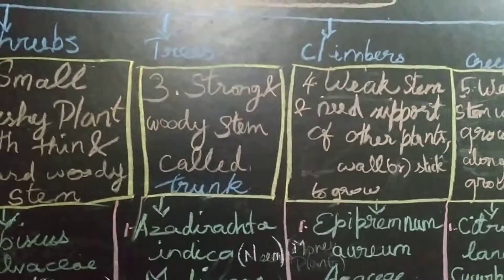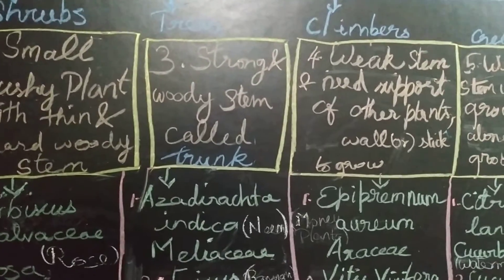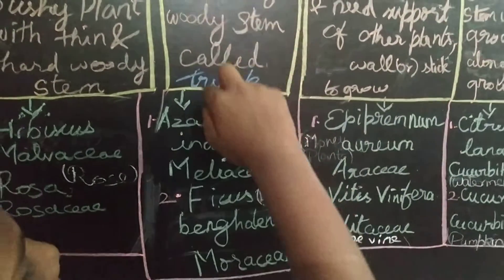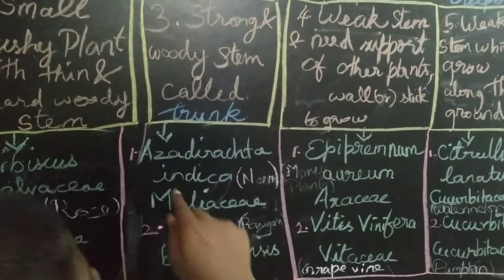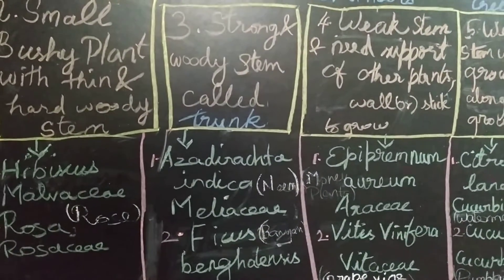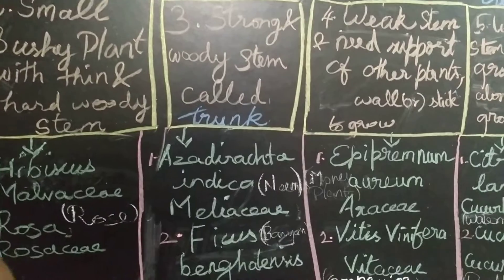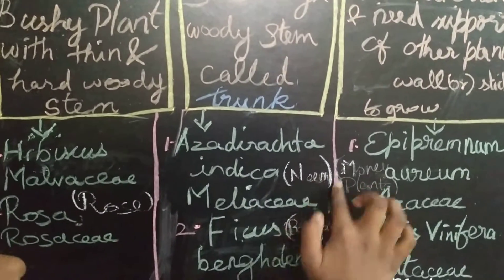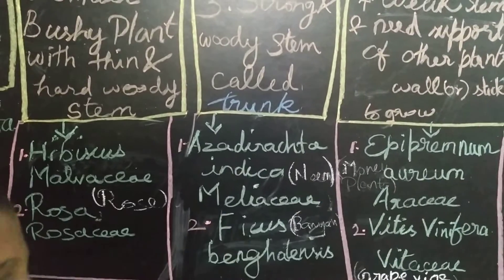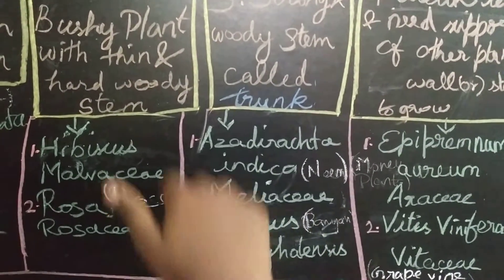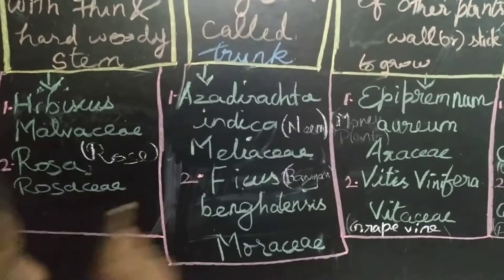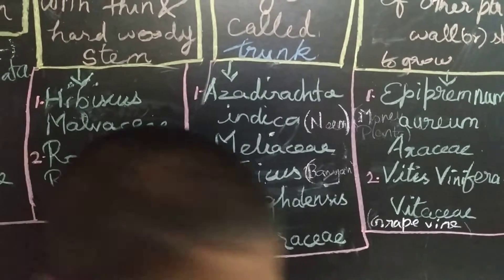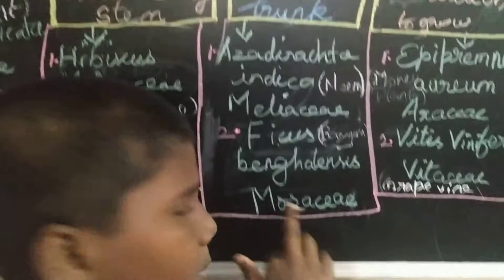The third type is Trees — strong and woody stem called a trunk. The Neem binomial name is Azadirachta indica and the family is Meliaceae. The Banyan's binomial name is Ficus benghalensis and the family is Moraceae.